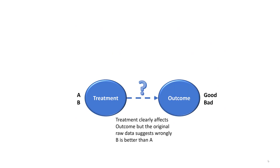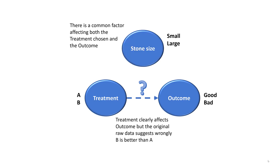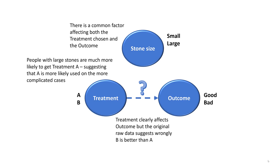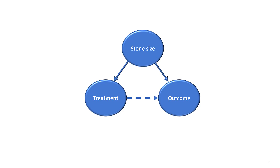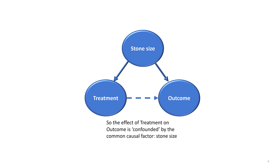Now there's a causal explanation for this. We know that the treatment clearly affects the outcome, but the original raw data suggests wrongly that B is better than A. In fact, there's a common factor affecting both the treatment chosen and the outcome — and that's of course the stone size. People with large stones are much more likely to get treatment A, already suggesting that A is more likely used on the more complicated cases. And people with large stones are also much more likely to have an unsatisfactory outcome. So the effect of treatment on outcome is confounded by the common causal factor, stone size.